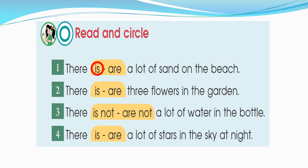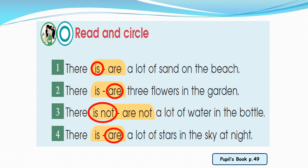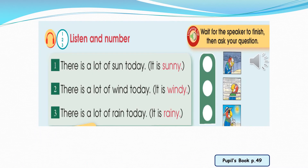Number 2: there are three flowers in the garden — very good. Number 3: there is a lot of water in the bottle — very good. Number 4: there are a lot of stars — of course it's plural. Grade 3, Unit 7 — the weather in Kuwait, page 49.